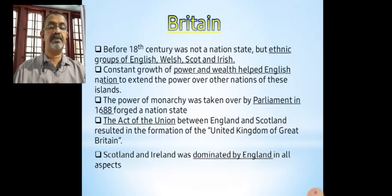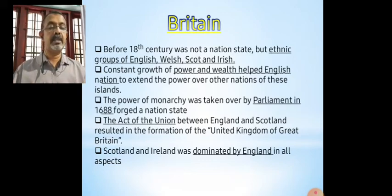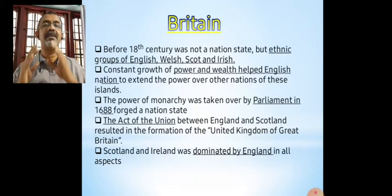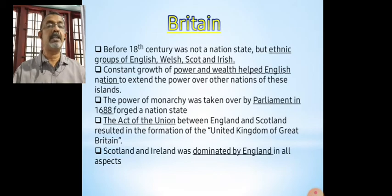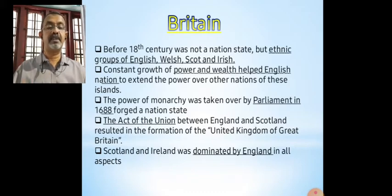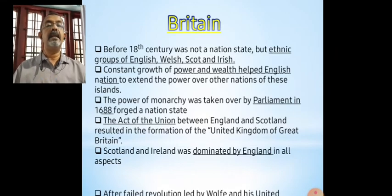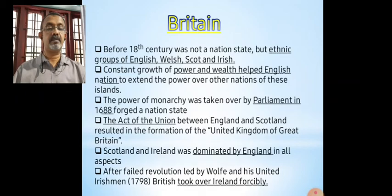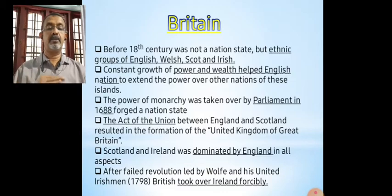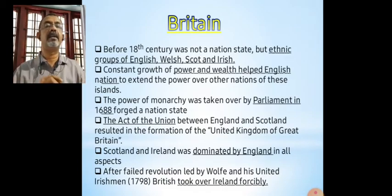Every aspect of their life was dominated by the English majority. Ireland and Scotland had a distinctive culture, their own culture and political institutions, but it was all dominated by England after the Act of Union. Ireland had a revolution which failed — it was under Wolfe Tone and his organization, the United Irishmen. It failed and England took over Ireland forcibly. Ireland was added to the union by force after 1798.